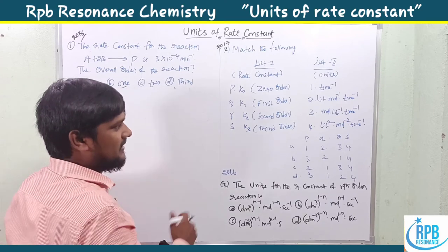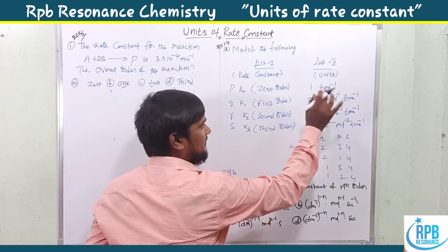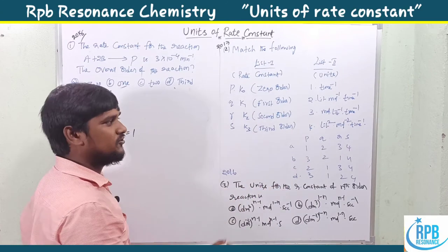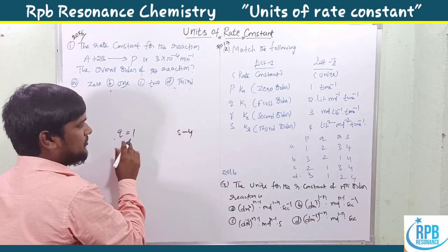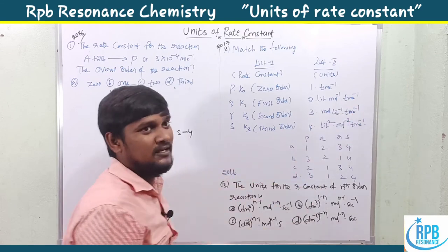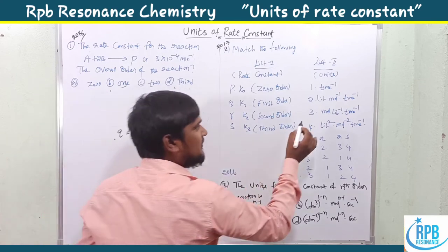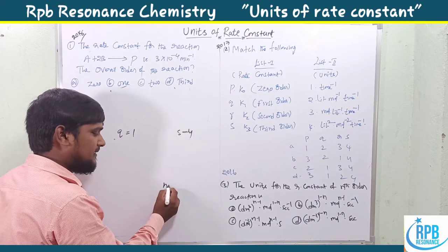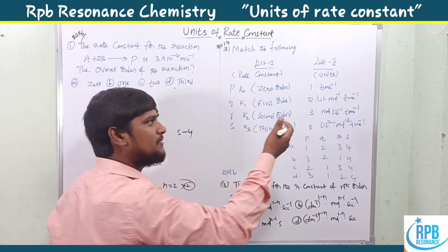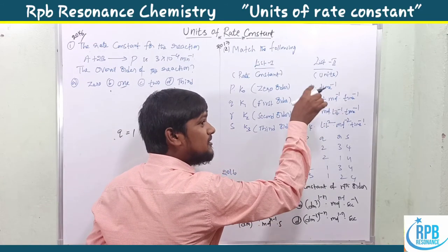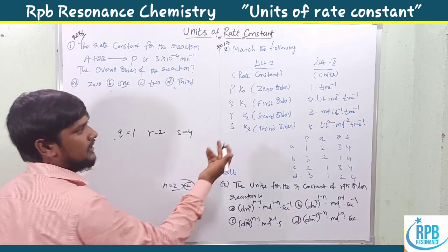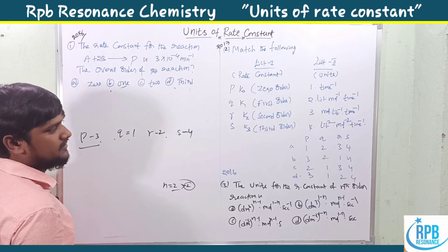We already know the concept: time inverse indicates first order, so Q equals one. Third order has liter squared units, so that entry is four. For the matching question, if liter has a positive sign, then n equals two or greater than two. If only one positive liter power, then order equals two, so R equals two. The remaining entry, three, corresponds to zeroth order. Therefore the correct matching is P-3, Q-1, R-2, S-4, giving the answer 3-1-2-4.